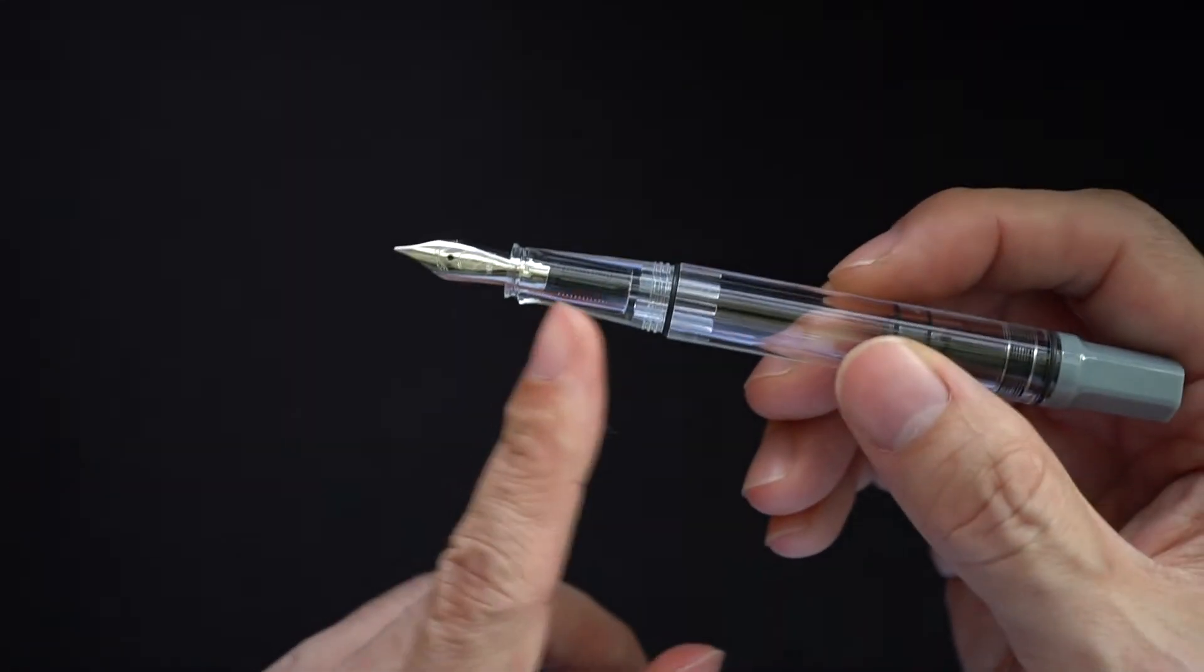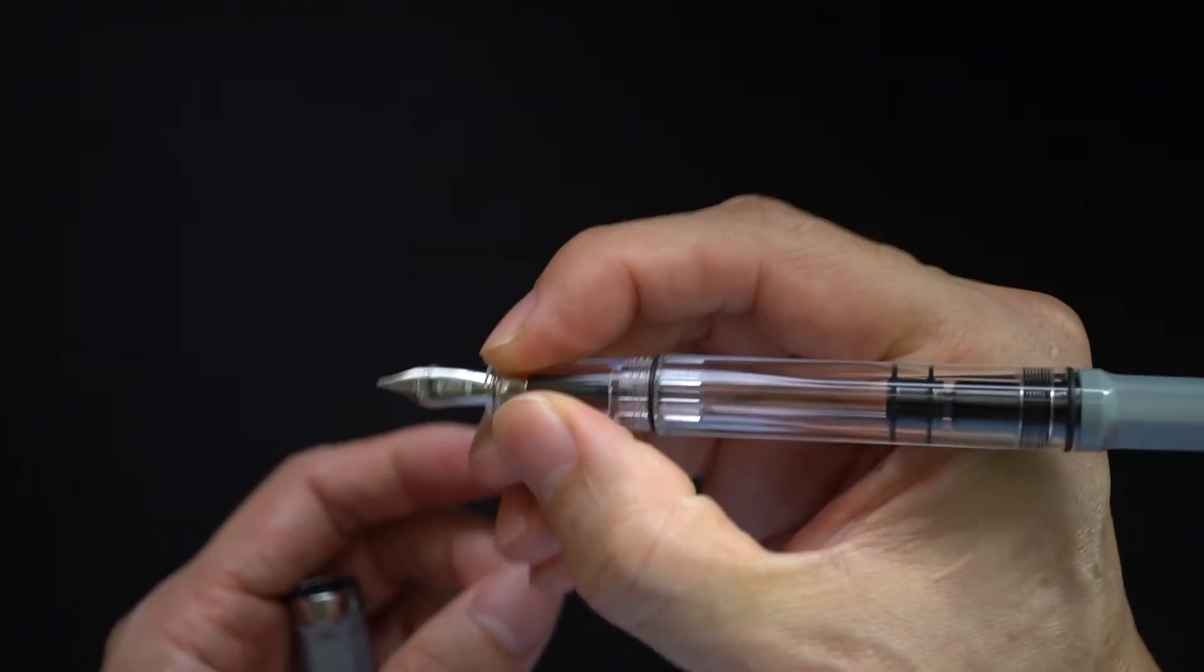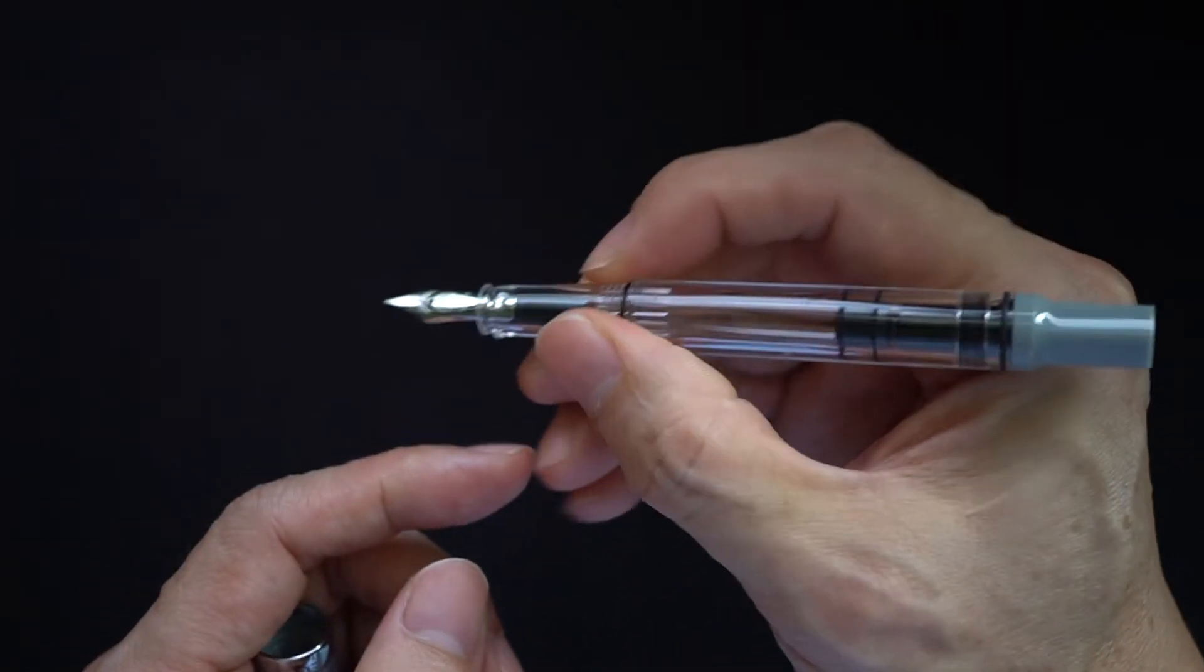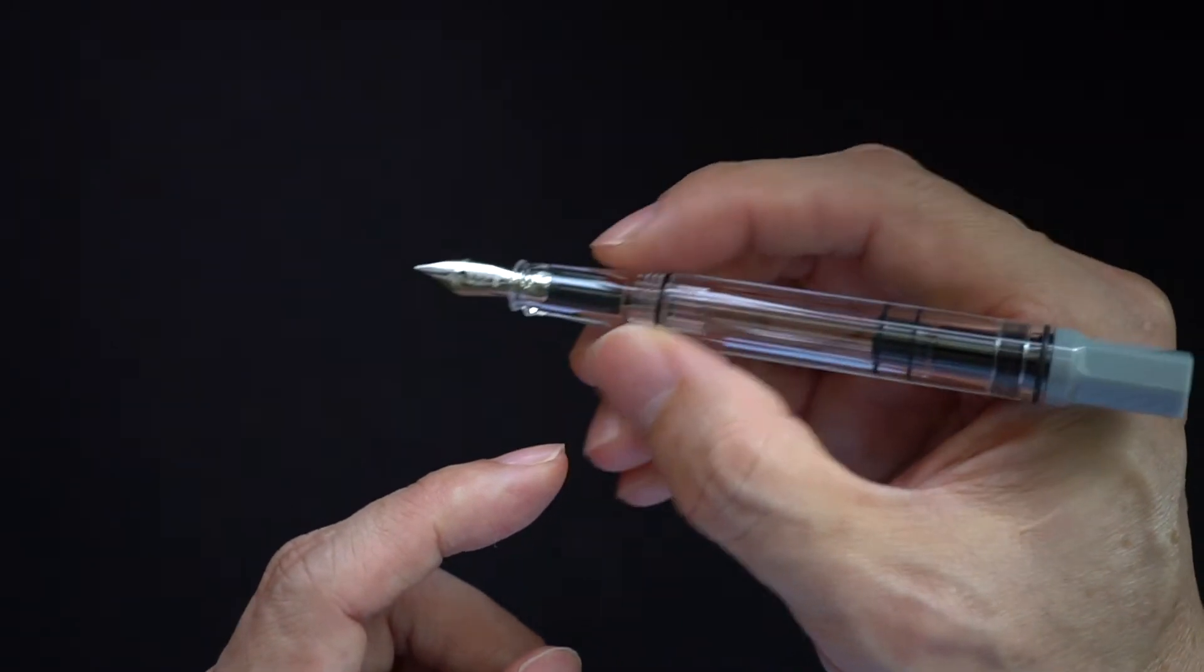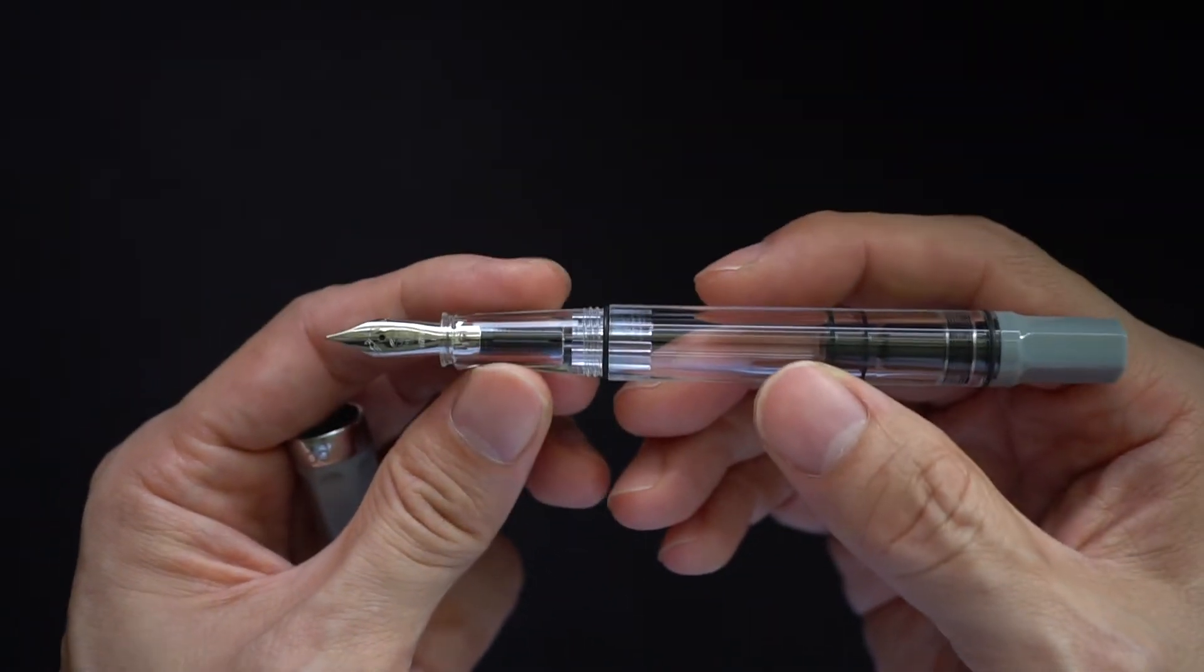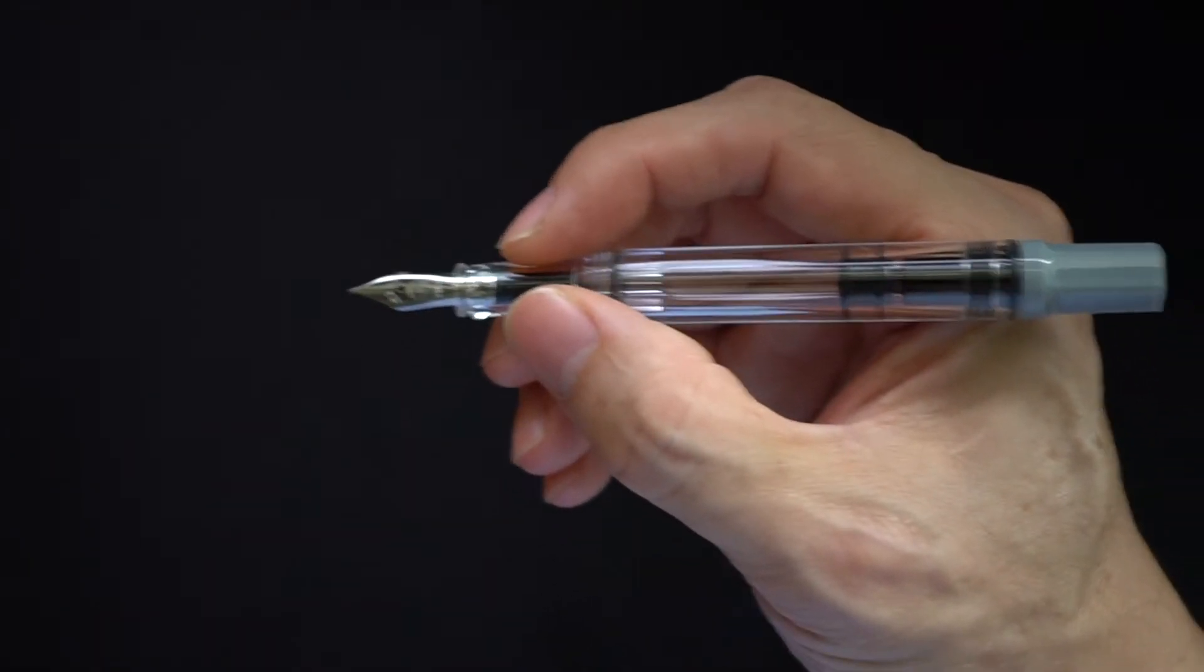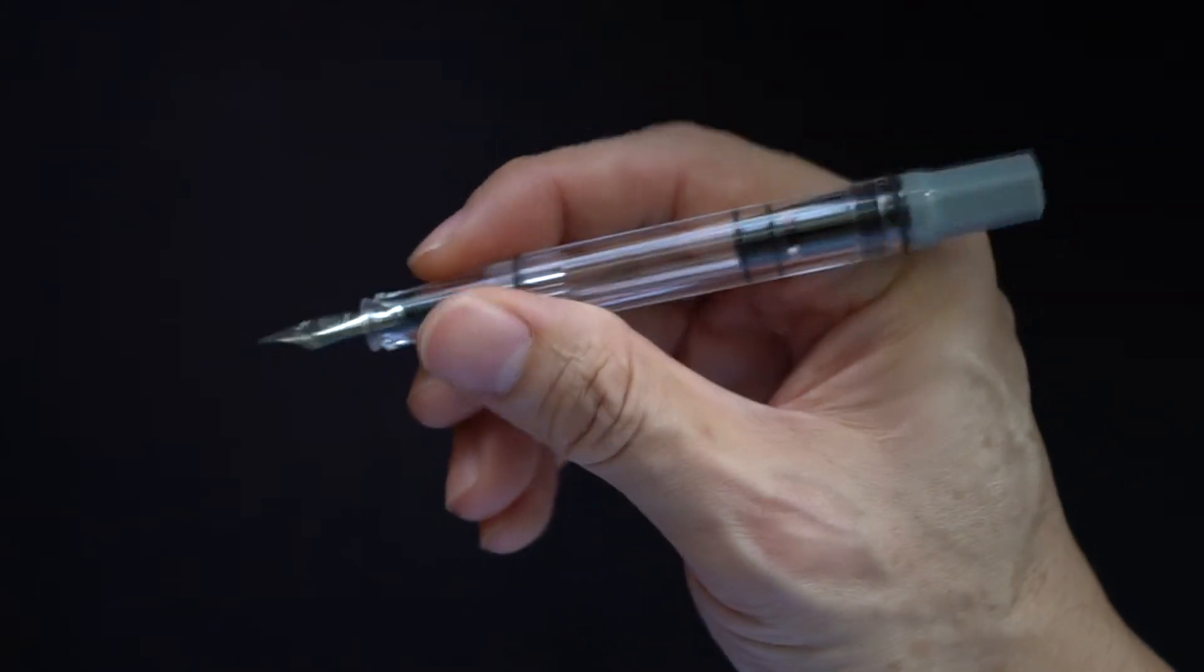I normally just use it unposted and it's long enough and light enough that you can actually write comfortably unposted for a long time. The section, which is my usual area which I highlight in my videos, is very very long, so you can position your grip either near the nib or even further back. And the screw threads are not sharp at all, so it's totally fine. It's a very easy pen to start off with and get used to. People with large hands can get used to it and people with smaller hands also can get used to it.